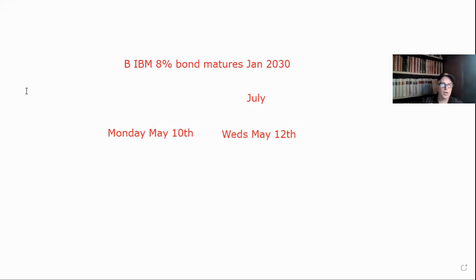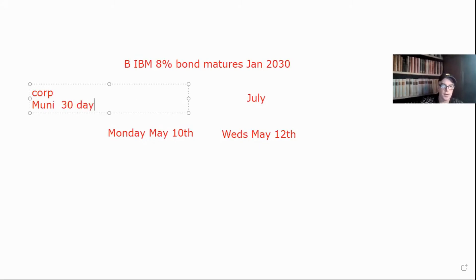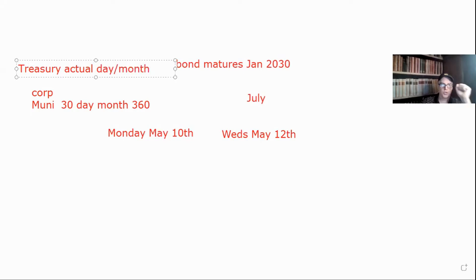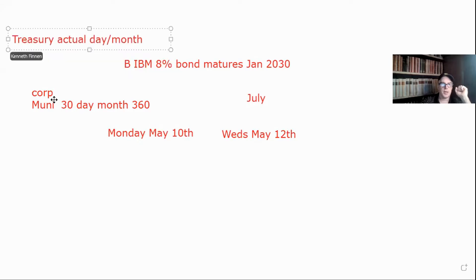So we know that since it's a corporate — remember that corporates and munis have a 30-day month and their year is 360 days. If it was a Treasury, it's actual days — we'll come back to that.